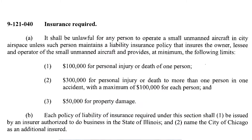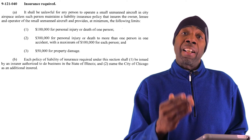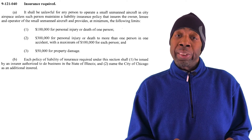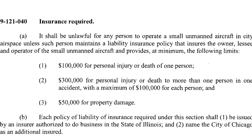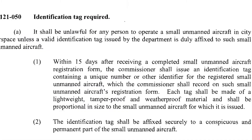You must also have insurance: $100,000 for personal injury or death for one person; $300,000 for personal injury or death of more than one person in one accident, with a maximum of $100,000 for each person; and $50,000 for property damage. You must also have an identification tag — within 15 days you will be issued a registration tag that you must firmly affix to your UAS or drone.